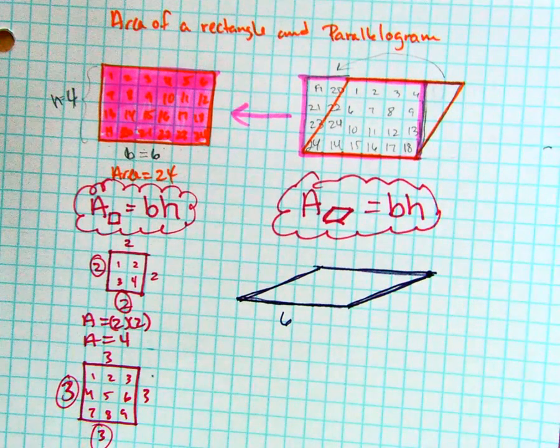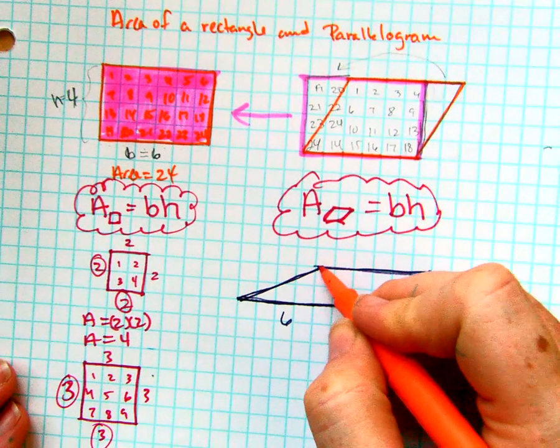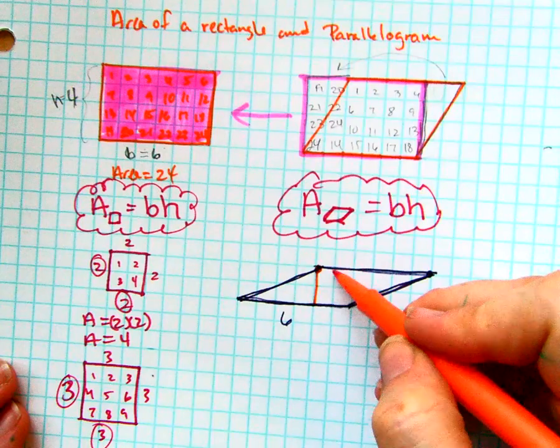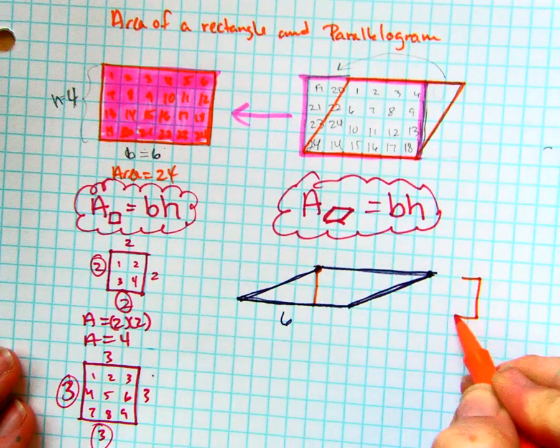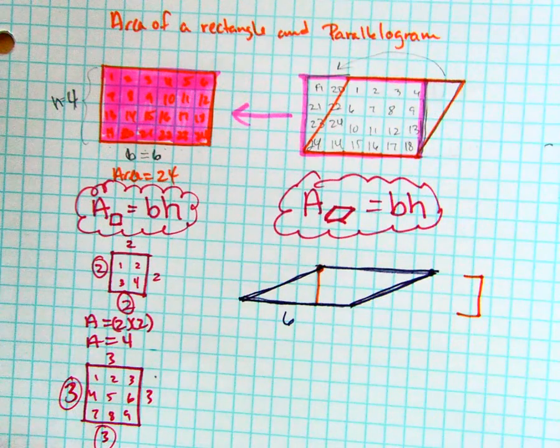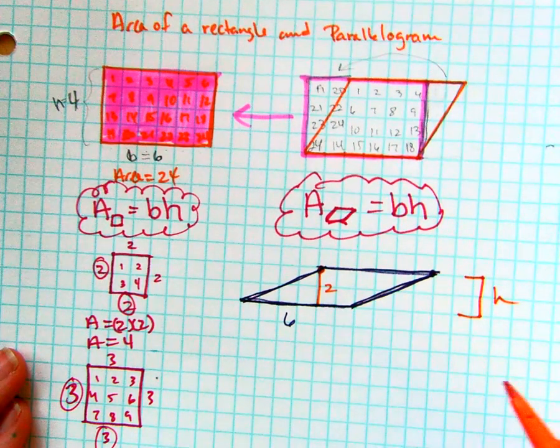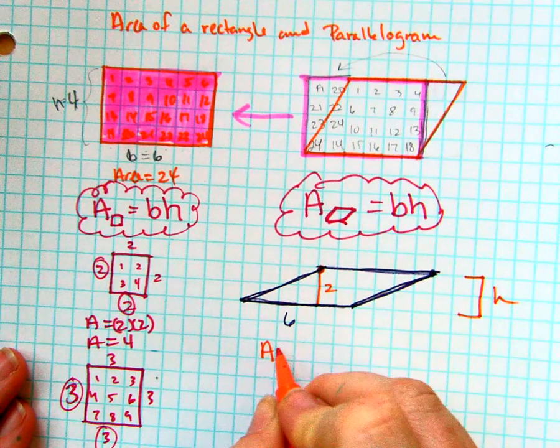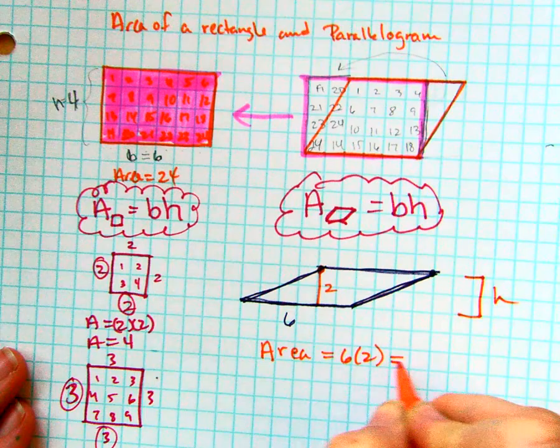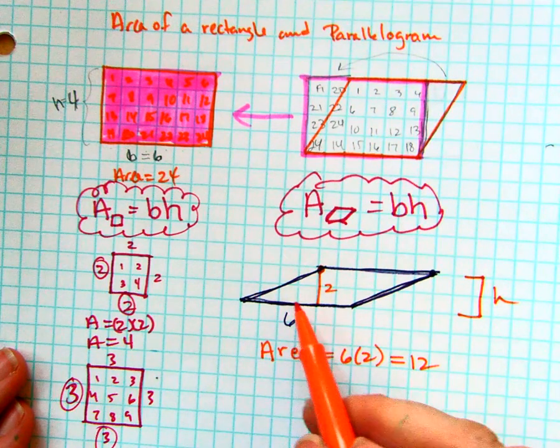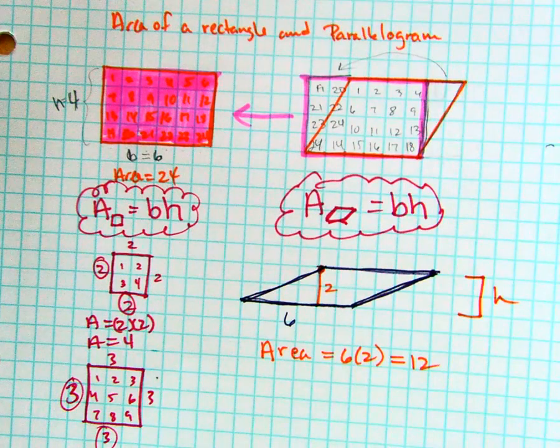And my height is just going to be this top part right here to the bottom. But really, it can be any of these points. You're really just looking for what is this length, or what is this height right here of the parallelogram. So in this case, it turns out it's 2. So if I wanted to find the area of this parallelogram, I would just take 6 times 2, and I would get 12 blocks. And they're kind of hard to count in this case, but it is indeed 12.